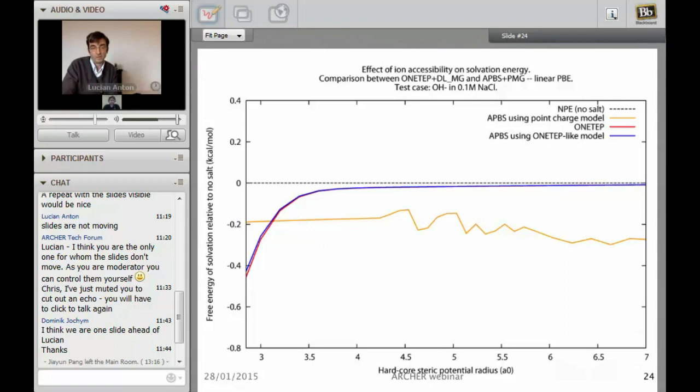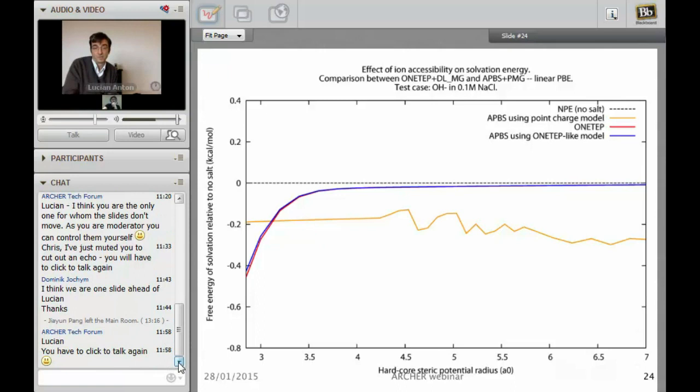In slide 24 Lucien has summarized the work that he and Jacek did to incorporate this into ONETEP. We have now in this plot a comparison between an APBS computation done with the same charge density, same boundary conditions, same electrostatic permittivity as well.